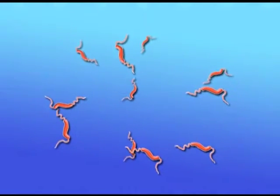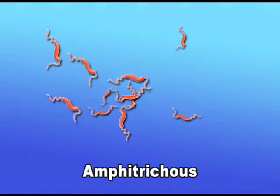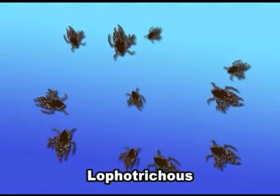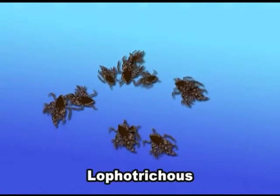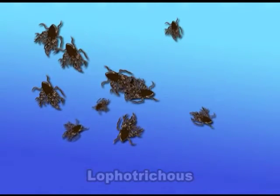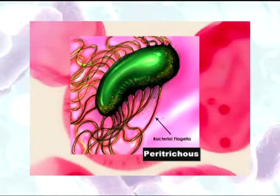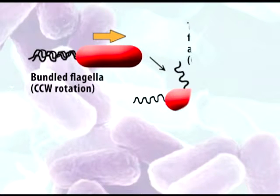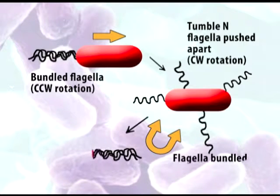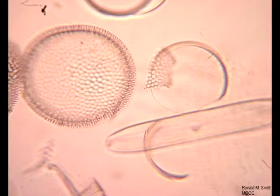When there are two flagella with one at each end, it is amphitrichous, as seen in Aquaspirillum serpens. Third is lofotrichous, where there are tufts of flagella at one or both ends, for example Pseudomonas fluorescens. Another condition is peritrichous, where flagella are present all around the body, as seen in Salmonella typhi. Bacteria with no flagella are referred to as atrichous.